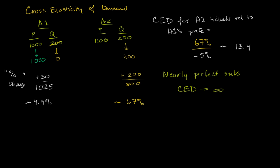In theory, if the two airlines are truly identical, even raising the price by a penny would send all customers to the other airline, and that number would approach infinity. Notice this cross elasticity was positive. That's different from regular price elasticity of demand, where you increase quantity by lowering price. Here, we raised the price of a substitute and raised the demand for the competing product — a positive relationship.